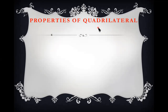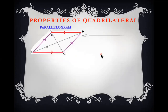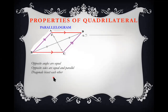Properties of quadrilaterals: 'quad' means four and 'lateral' means line. For a parallelogram: opposite angles are equal, opposite sides are equal and parallel, diagonals bisect each other (line BD and AC are diagonals), and the sum of any two adjacent angles is equal to 180 degrees.